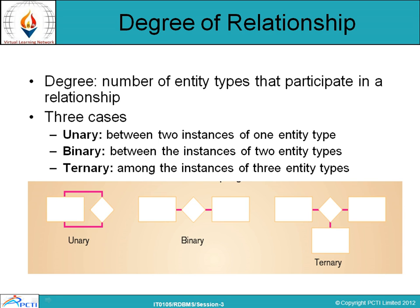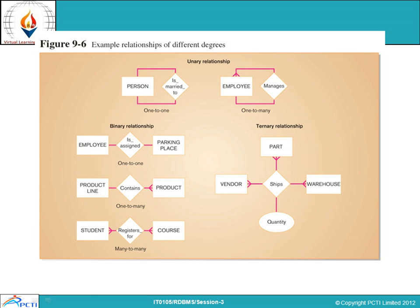An overall example shows: one-to-one — a person is married to a person; many — an employee is managed by an employee (a binary relationship between two employee instances). Another binary relationship: an employee is assigned to a project, and a product line contains many products. Many-to-many: many students register for many courses. A ternary relationship example shows the relationship among three entities with many-to-many cardinality involving a vendor.